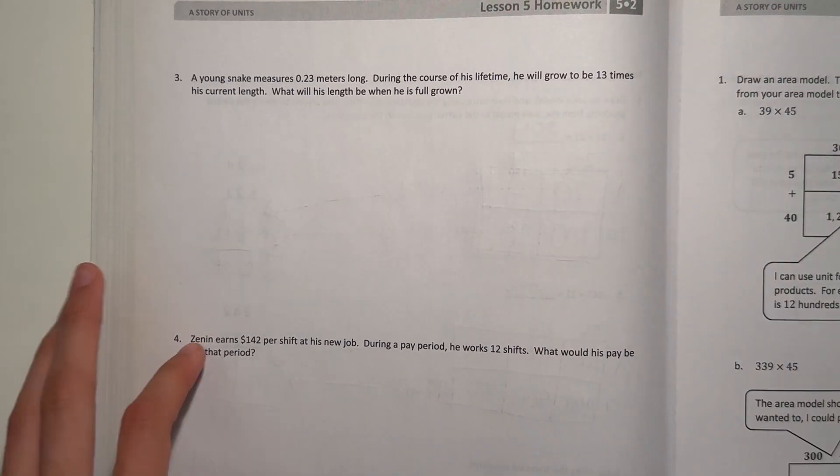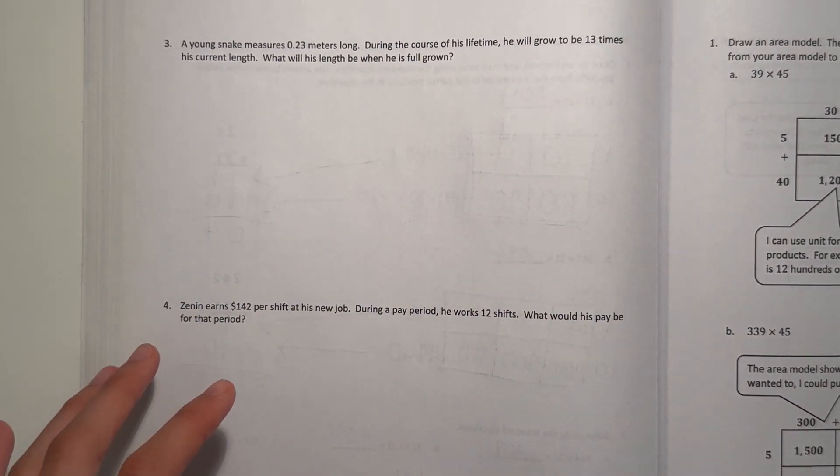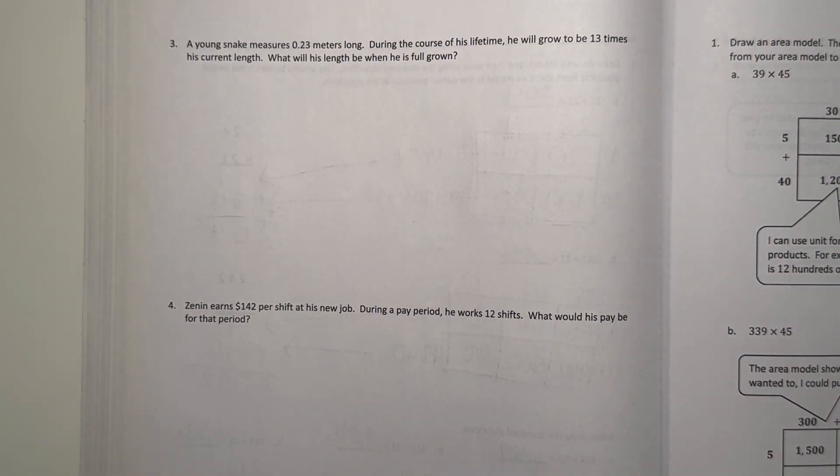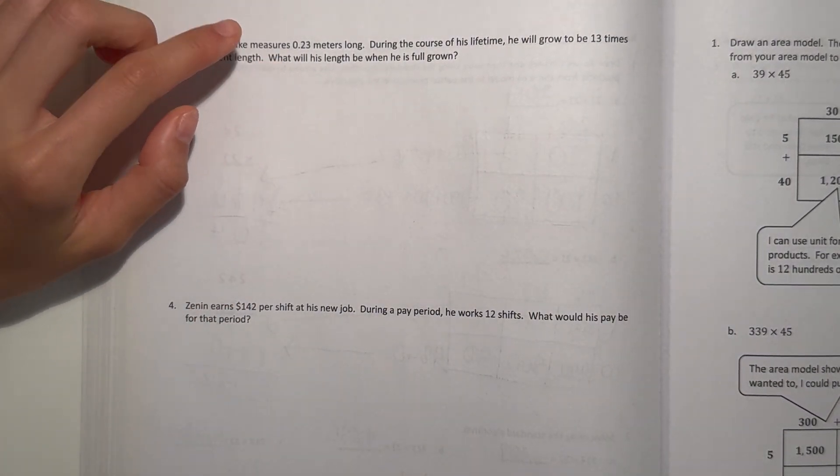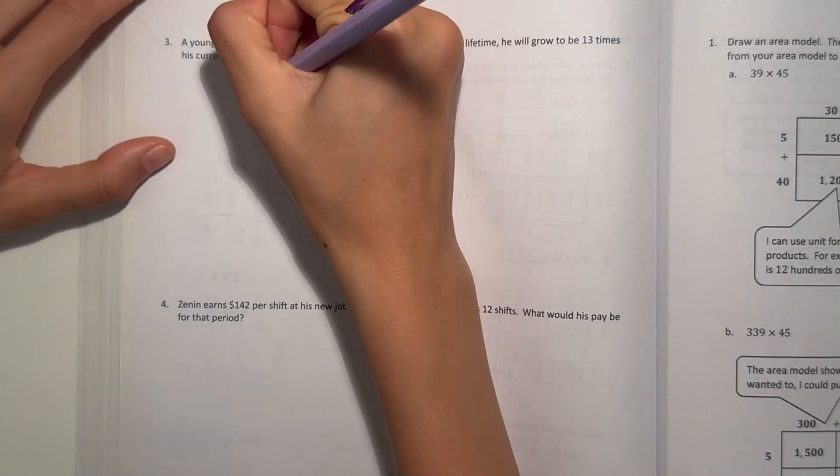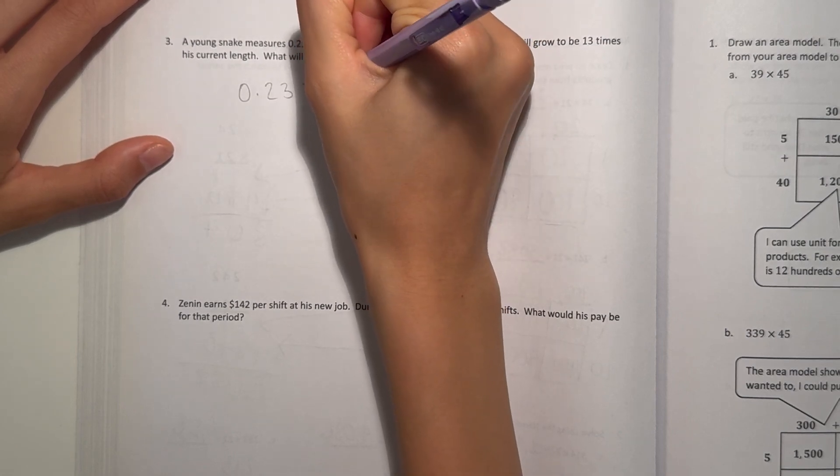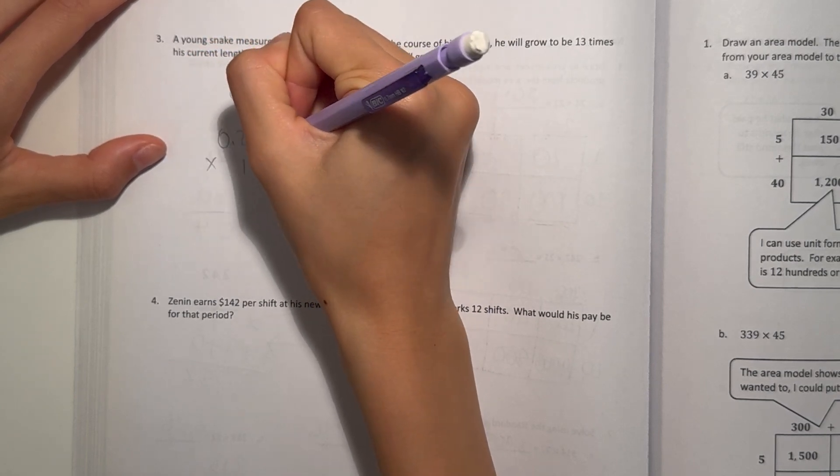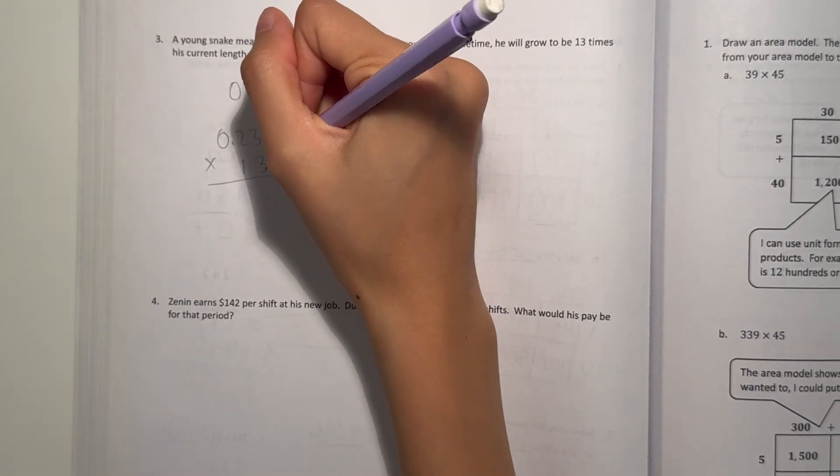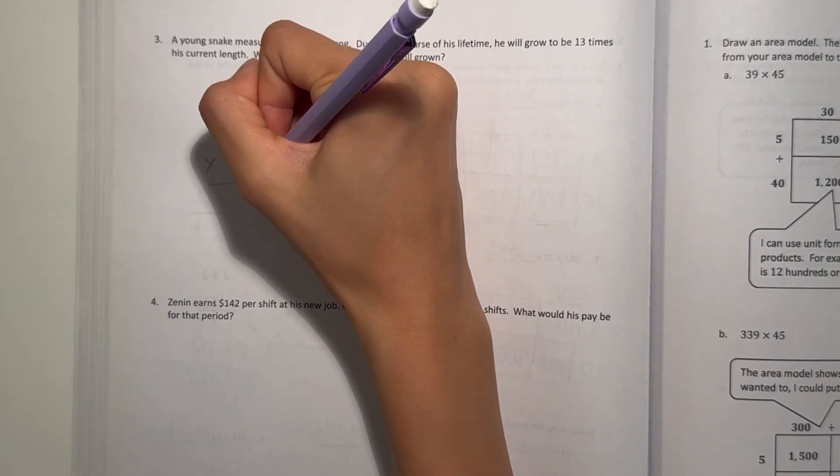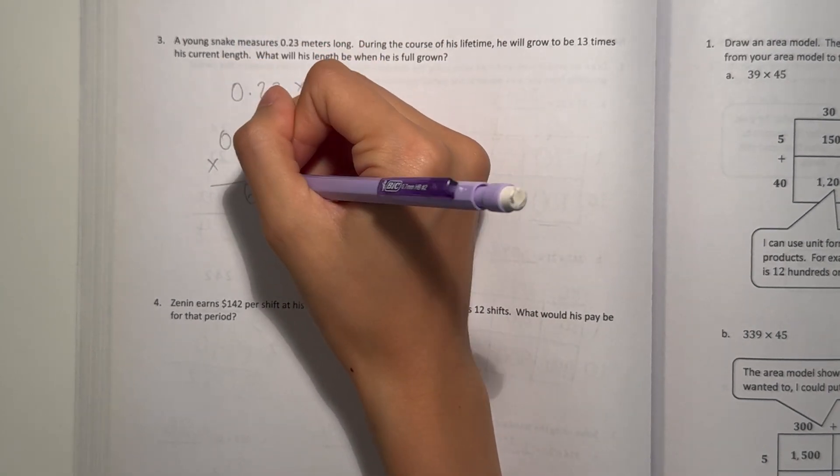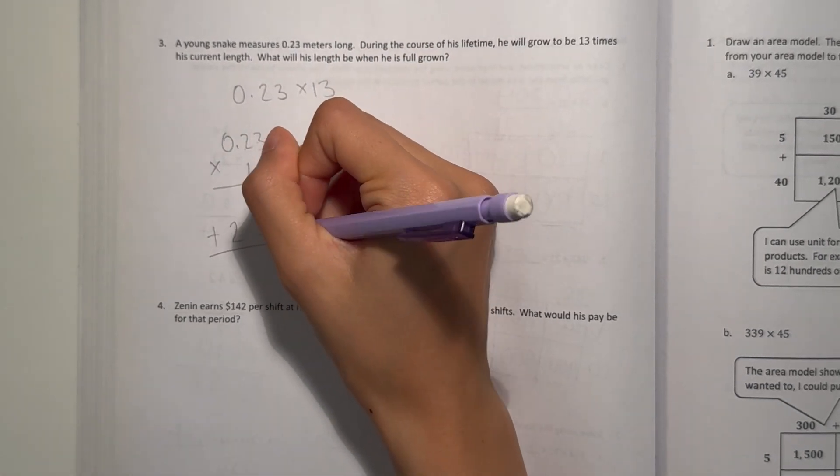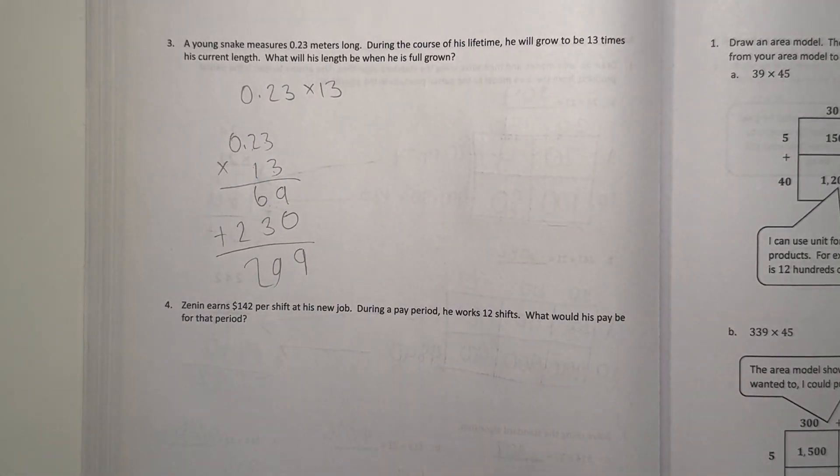Number 3. A young snake measures 0.23 meters long. During the course of his lifetime, he will grow to be 13 times his current length. What will his length be when he is full grown? 0.23 times 13. Let's do our standard algorithm. So 3 times 3 is 9. And 2 times 3 is 6. Now add a 0. 3 times 1 is 3. And 2 times 1 is 2. So we add it together. Our answer is 9, 9, 2. So 299.